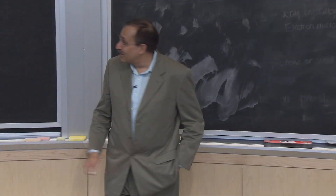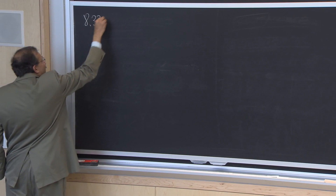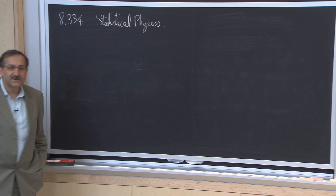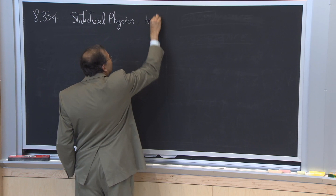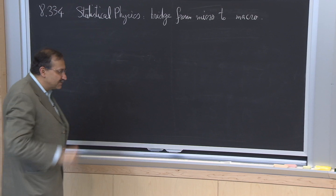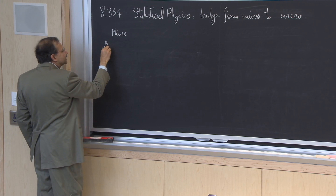We are covering 8.334, which is statistical physics. Statistical physics is a bridge from microscopic to macroscopic perspectives, and I'm going to emphasize a lot on changing perspectives. At the level of the micro, you have the microstate characterized by a collection of momenta and coordinates of particles, such as particles of gas in this room.